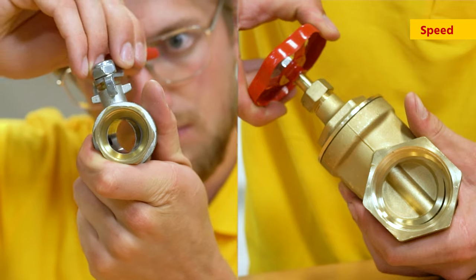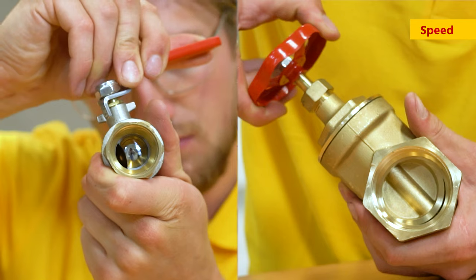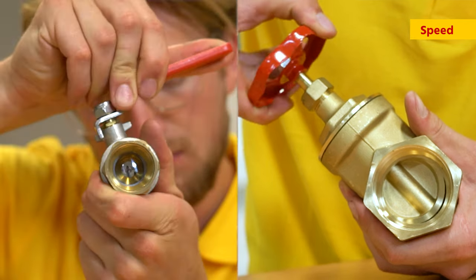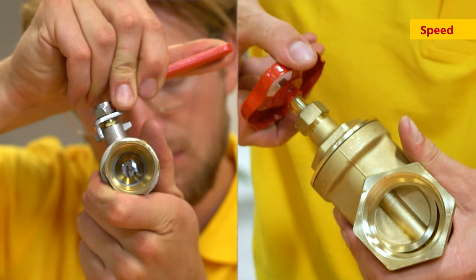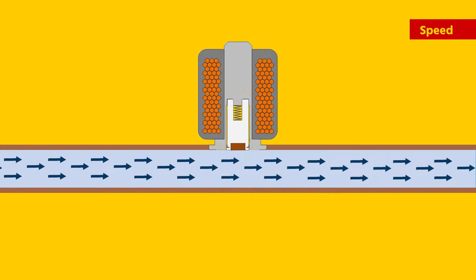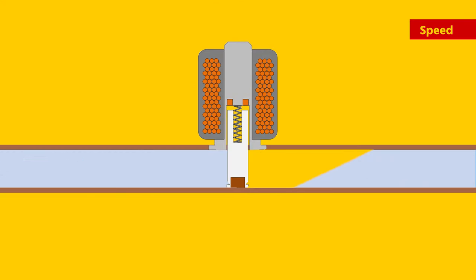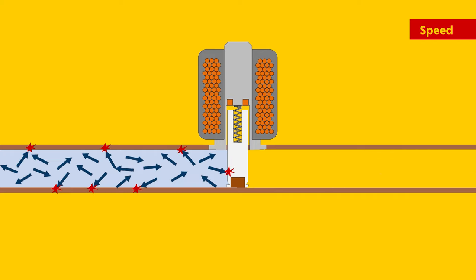A ball valve can close or open quicker than a gate valve. This can be an advantage. However, a quick closing valve can cause water hammer and this is undesirable.